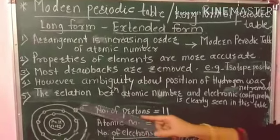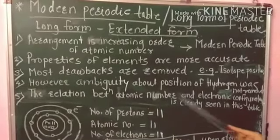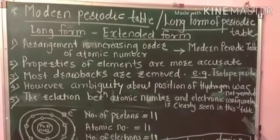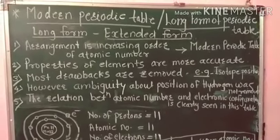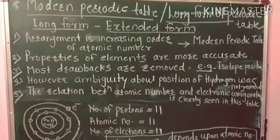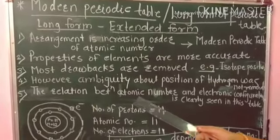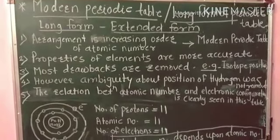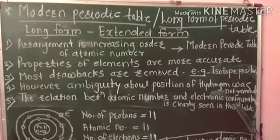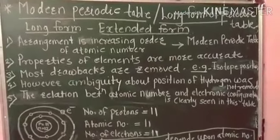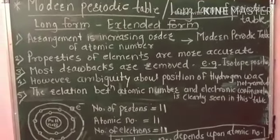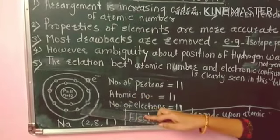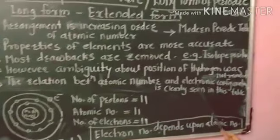There is a clear relation between atomic number and electronic configuration in this table. The atomic number is the number of protons present in the nucleus. Electronic configuration is the distribution of electrons into the different shells or orbits of the atom.